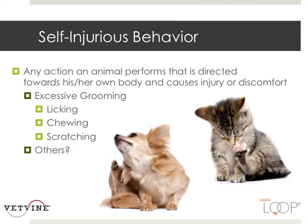So we always have that on our list, and any time the client is reporting new sensitivities in their patient — let's say a seven-year-old dog that has never had a problem with having people touch him along the back or the paws, and now he does — I'm going to be concerned that there could be some source of pain. Just as a definition, self-injurious behavior is one of the very common signs of likely pain, neuropathic pain, or even orthopedic pain that a veterinary behaviorist would see. What I'm defining that as is any action that an animal performs that is directed towards his or her own body and causes injury or discomfort.